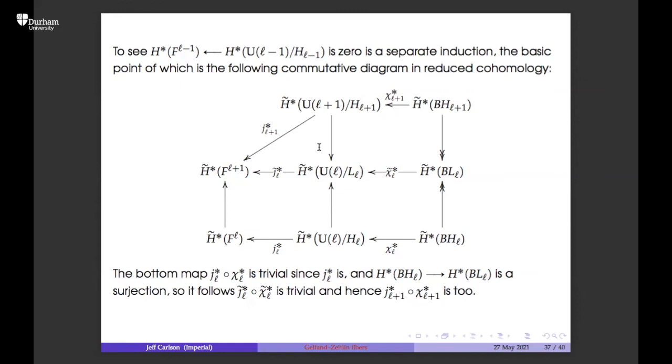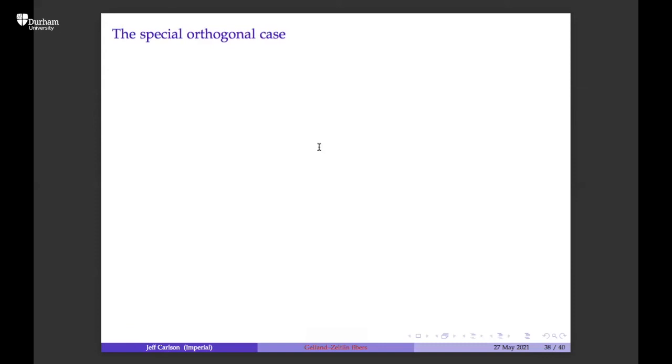That's why the map induces zero in cohomology — the key step is a diagram chase. This finishes the induction.